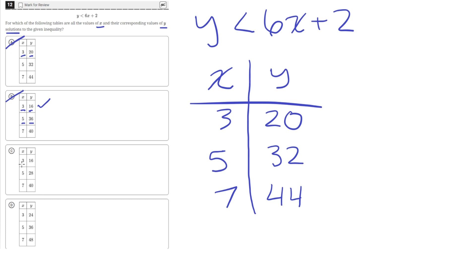Answer choice C says that an x value of 3, y is 16. That's good, because 16 is less than 20. And an x value of 5, y is 28. That's good, because 28 is less than 32. And an x value of 7, y is 40. Which is also good, because 40 is less than 44. So answer choice C seems to be correct.